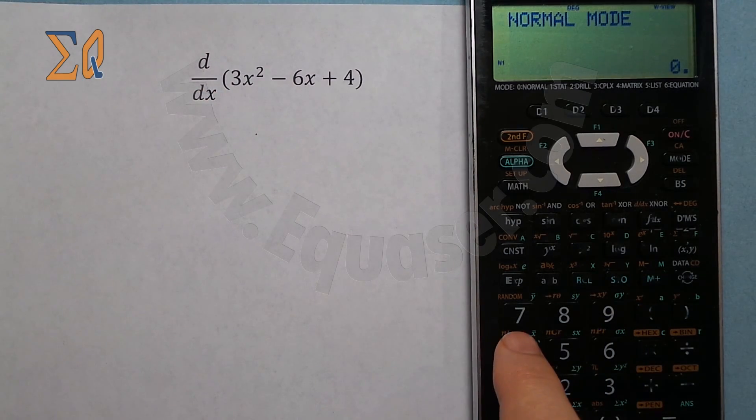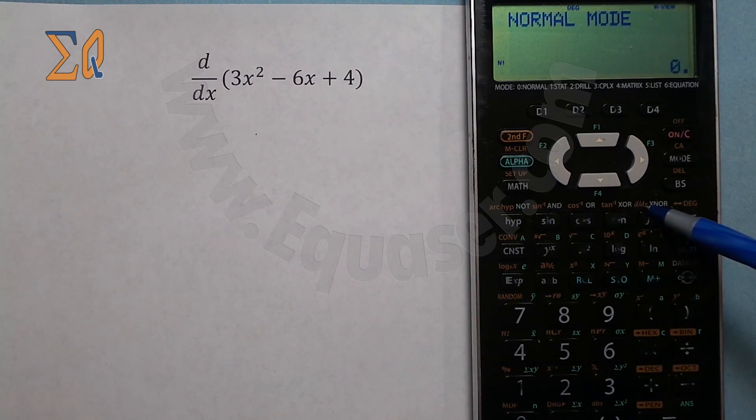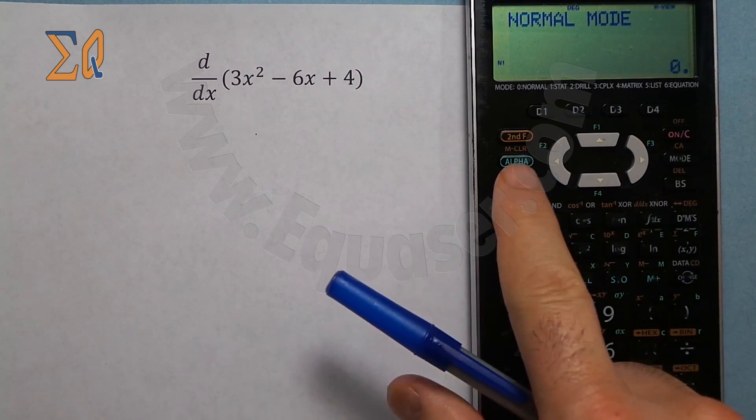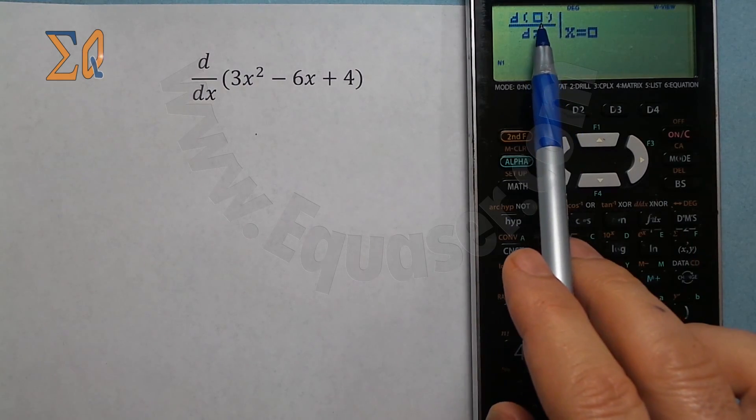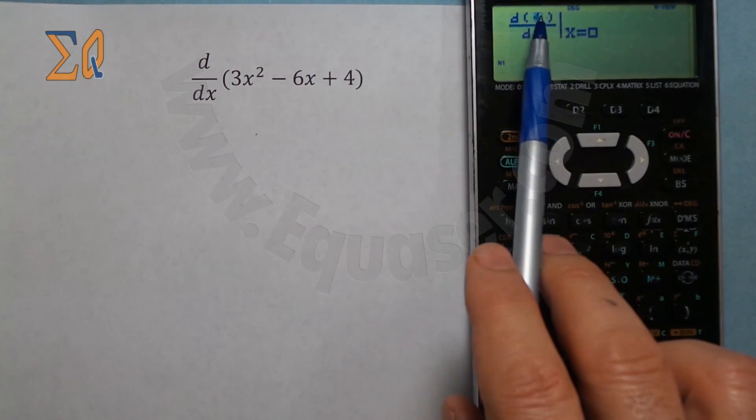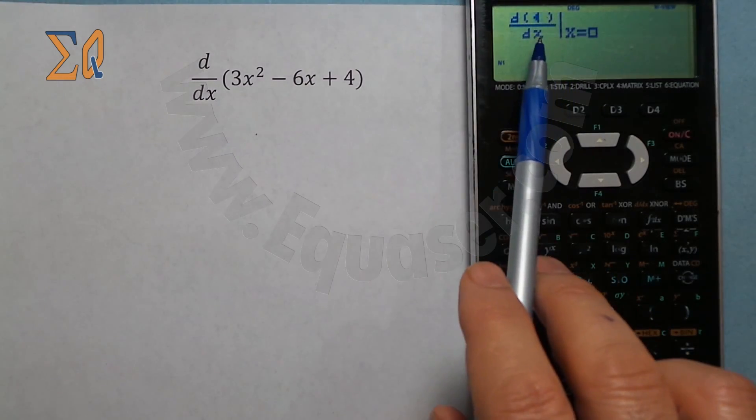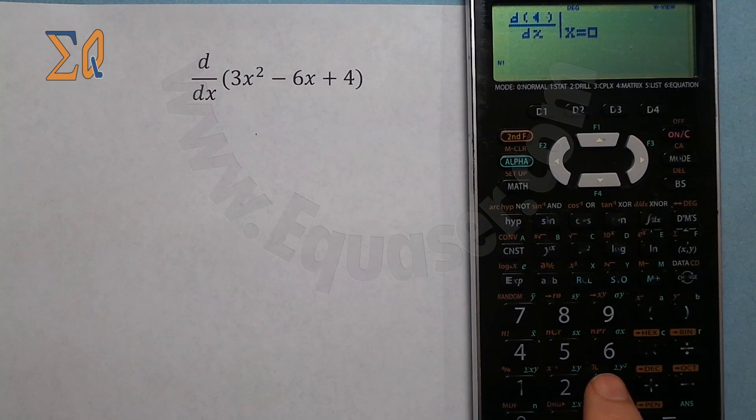To evaluate the derivative, we press this button d/dx, so I press shift and this one. The function goes here with respect to x, so my values are x. Now let's enter 3x² three.